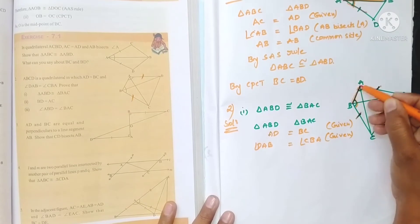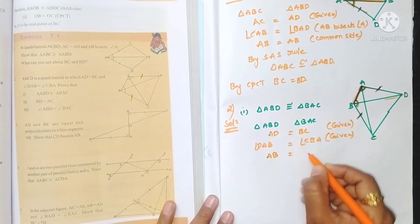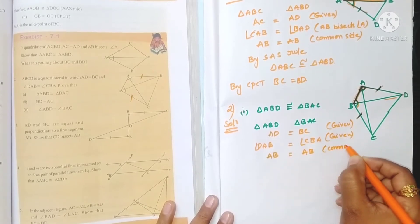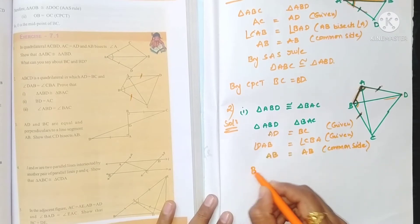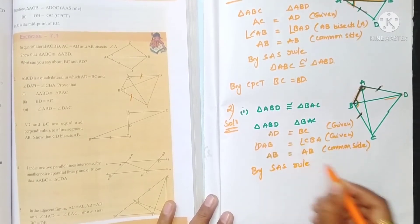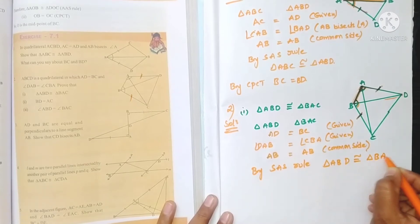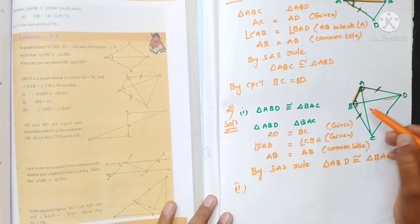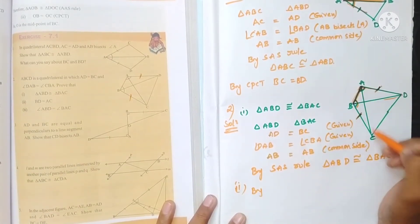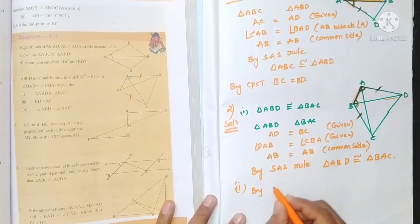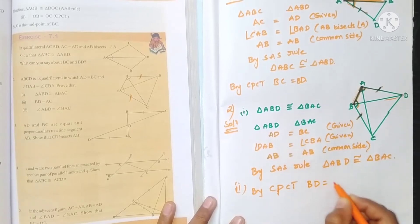AB is a part of triangle ABD and also a part of triangle ABC. So AB is equal to AB — common side. We have two sides and the included angle equal. By SAS criterion, the two triangles are congruent: triangle ABD is congruent to triangle BAC. By CPCT, BD is equal to AC.